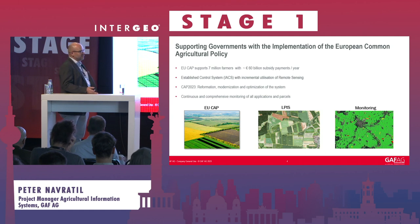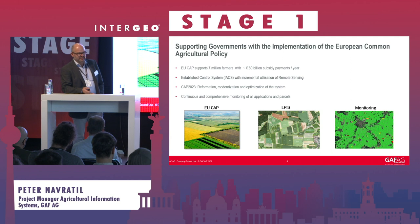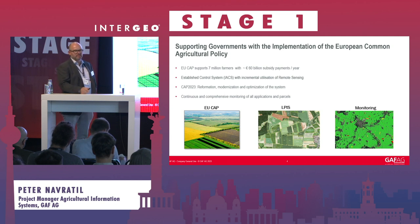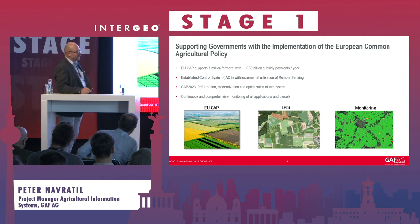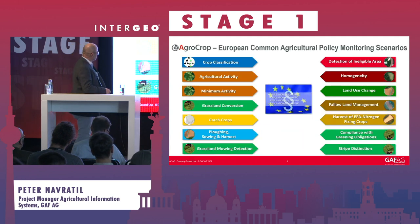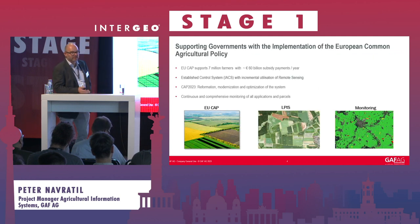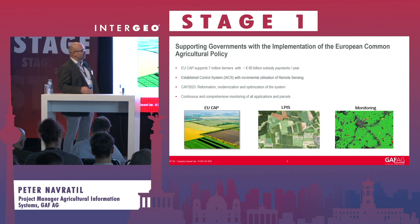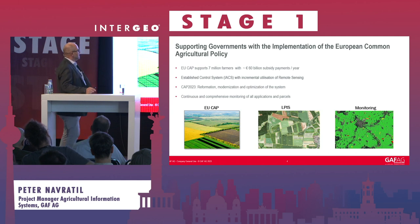The European CAP made, already since the 1980s, the use of earth observation and geo-information technology mandatory for member states. This led to agriculture actually being one of the sectors really driving the development of earth observation methods from the beginning, and also creating significant markets for that. One of the key elements is the Integrated Agricultural Control System — basically GIS systems which member states need to use. We have been supplying such systems already since the 1990s to many federal states in Germany and other countries to facilitate their monitoring tasks.